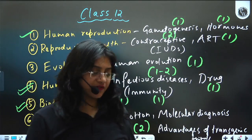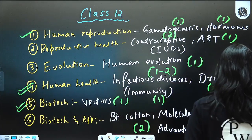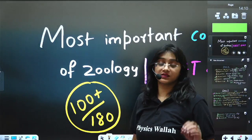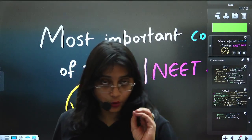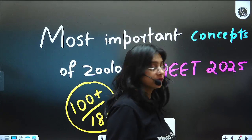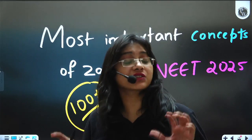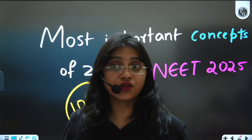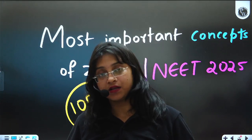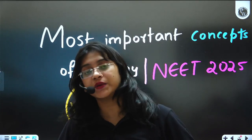I have listed around twenty-six to twenty-seven concepts. Even if you consider twenty-five concepts, at four marks each, that is around one hundred marks you can easily score from these important concepts alone. I hope this video is helpful. Please go through all these concepts very well because from these, guaranteed questions are asked in the NEET exam in zoology. Let's meet in the next video — until then, bye!